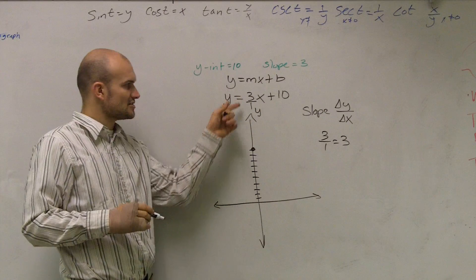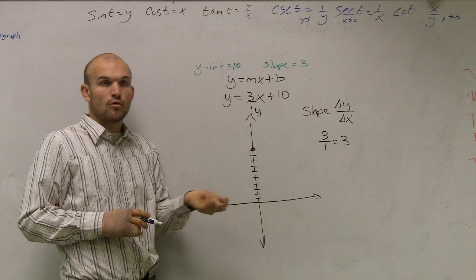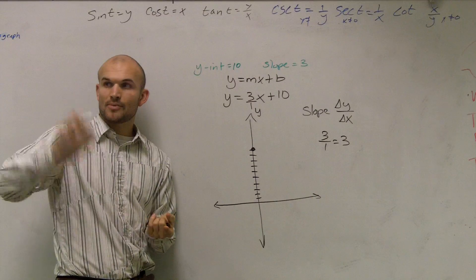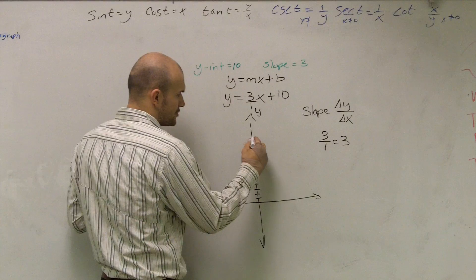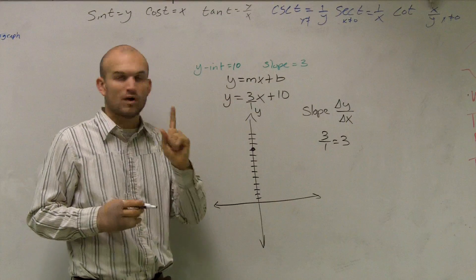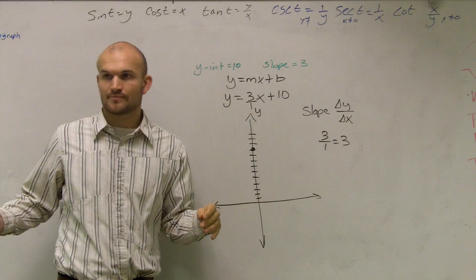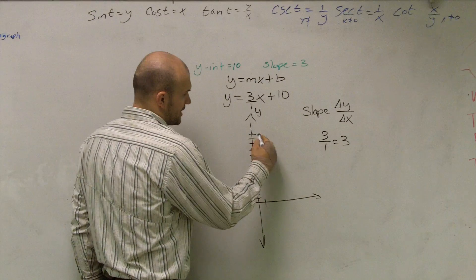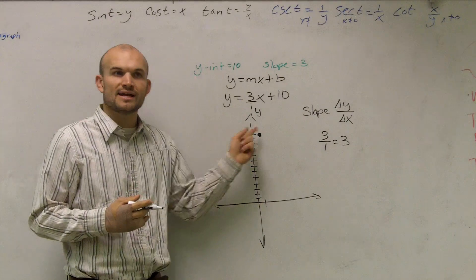So therefore, my slope now tells me to change my y units, my vertical units, 3, positive 3. So if it's positive, does that tell me to go up or down? Up. So I'm going to go up 3 units: 1, 2, 3. Then it says to change horizontally by 1 positive unit. Positive tells me to go to the right or the left? Right. So I'm going to go up 3 and then to the right one unit. So my slope takes me from one point to the next point.